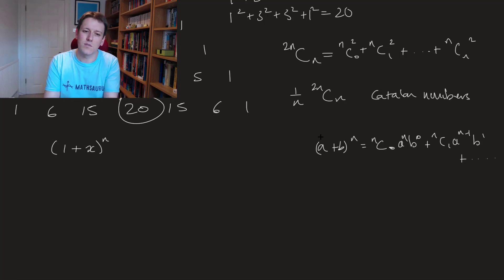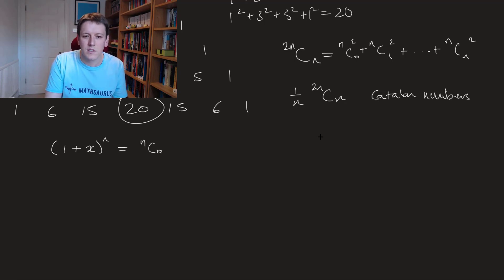So here the a and the b are x and 1 so actually the ones are not going to appear in here and all of the coefficients of x are just going to be the binomial coefficients themselves. So this expansion is just going to be n choose 0 and then plus n choose 1 times x plus n choose 2 times x squared all the way up to n choose n times x to the n.